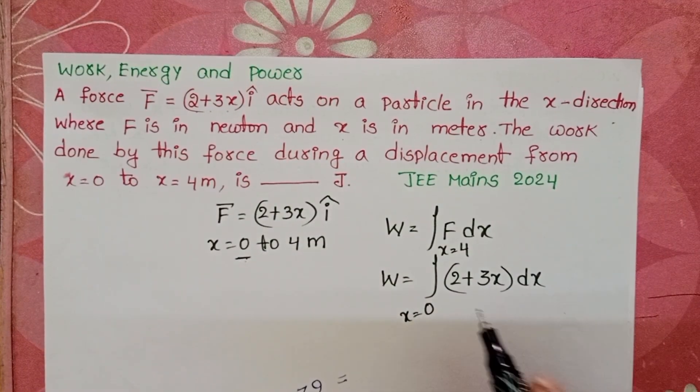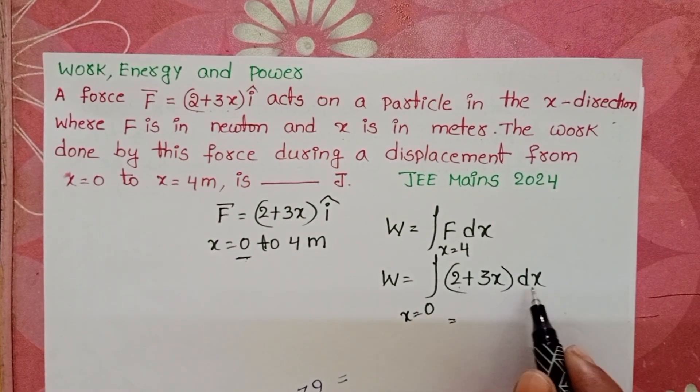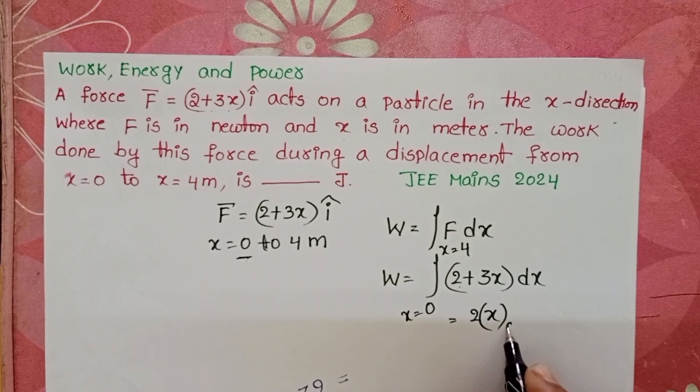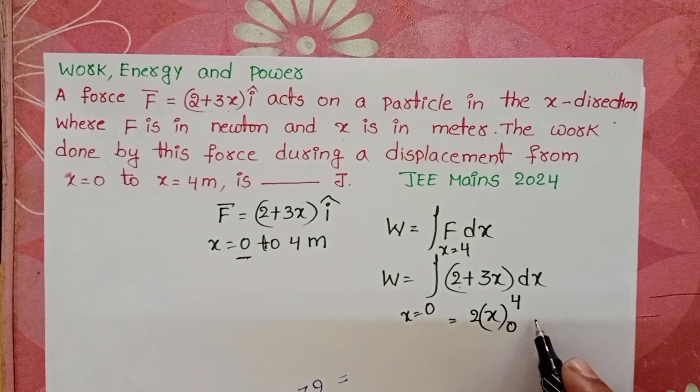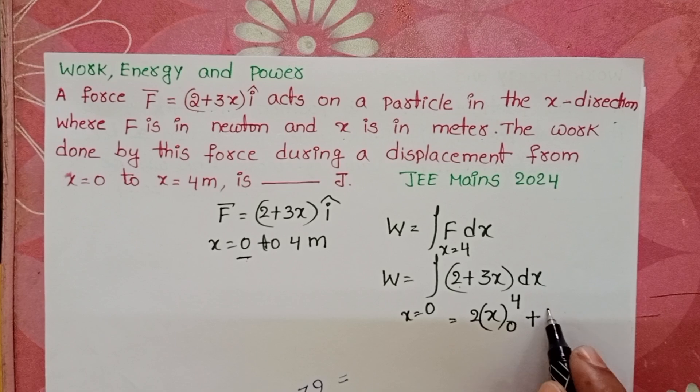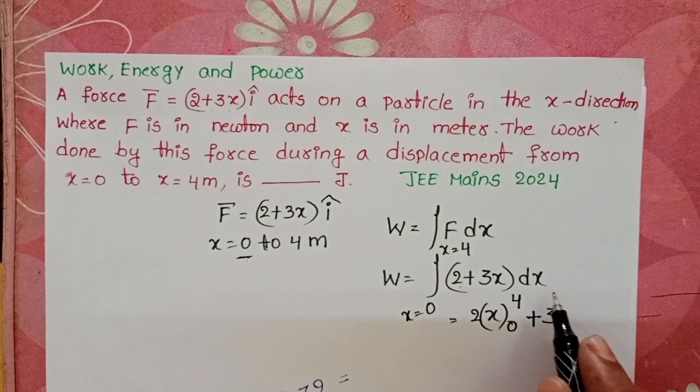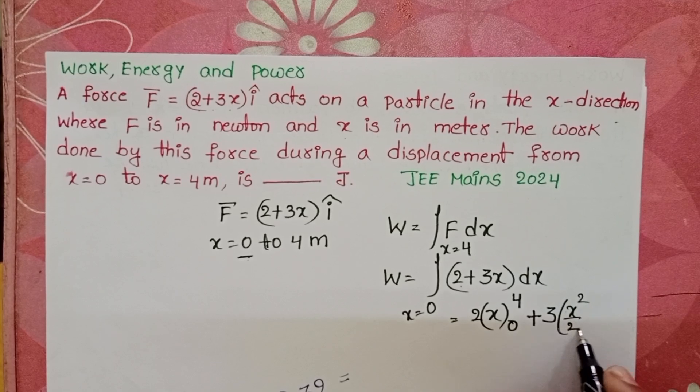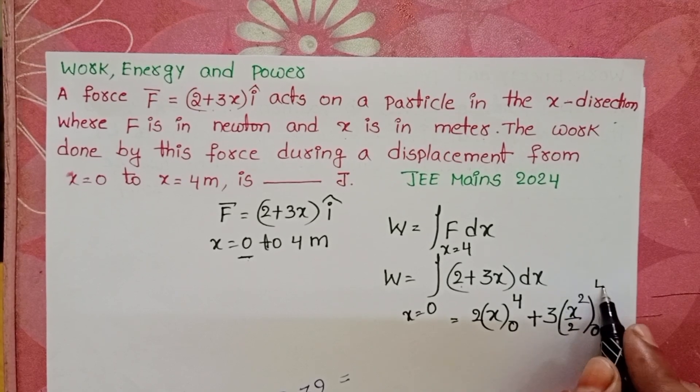Now do the integration. Integral 2 dx equals 2x, and the limits from 0 to 4. Plus, 3 is constant, integral x dx equals x² by 2. x² by 2, and limits from 0 to 4.